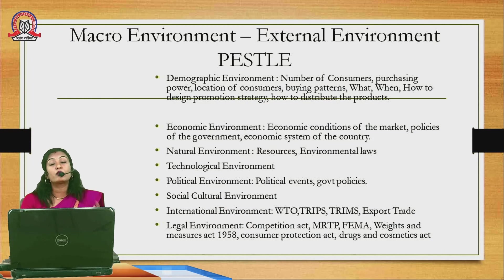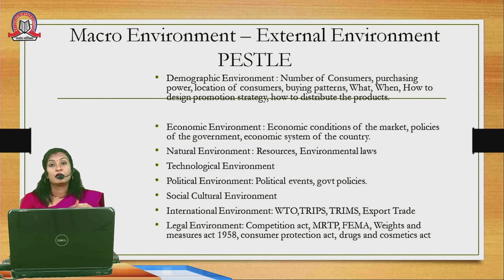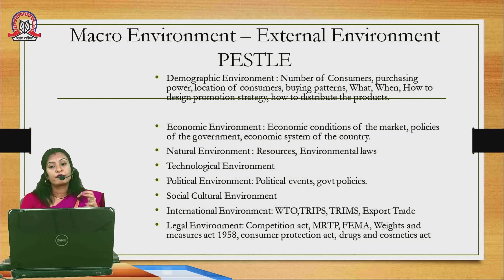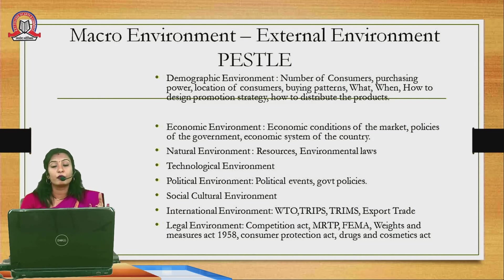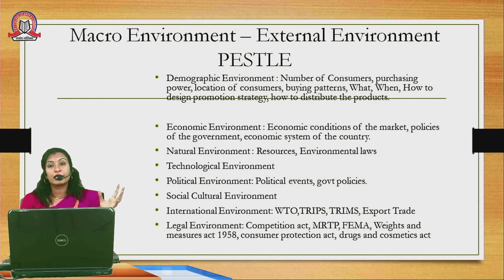The macro environment is called the external environment — also referred to as PEST or PESTIL analysis, comprising Political, Economic, Social, Technological, Legal, and Environmental factors. The first external factor is the demographic environment: the number of consumers in a particular area, their age group, gender classification, income capacity, purchasing capacity, location, and buying patterns.